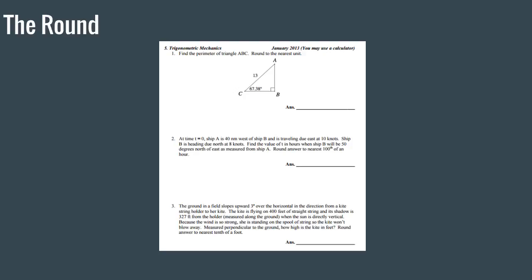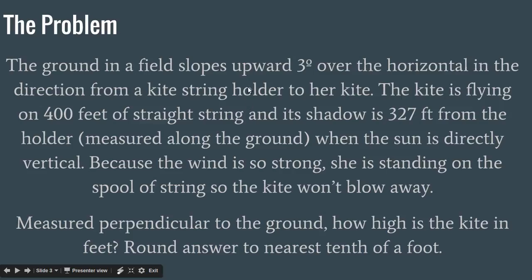Today we are doing Problem 3. The ground in a field slopes upward 3 degrees over the horizontal in the direction from a kite string holder to her kite. The kite is flying on 400 feet of straight string, and its shadow is 327 feet from the holder, measured along the ground, when the sun is directly vertical. Because the wind is so strong, she is standing on the spool of string so the kite won't blow away. Measured perpendicular to the ground, how high is the kite in feet? Round answer to the nearest tenth of a foot.